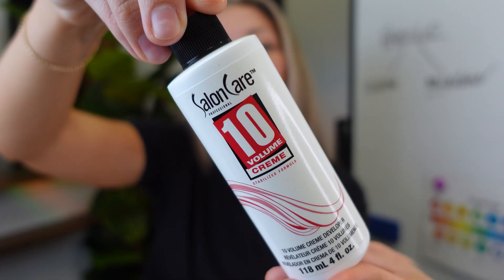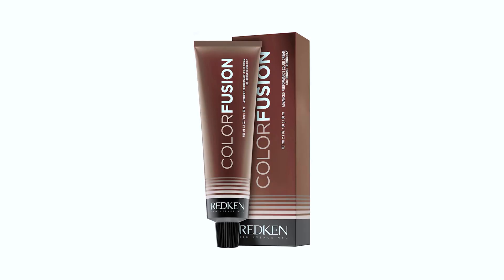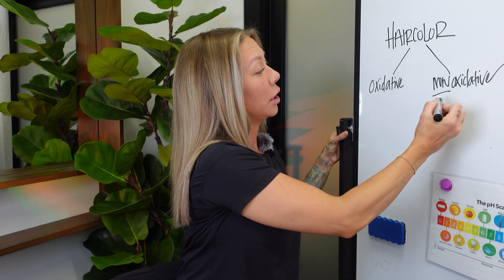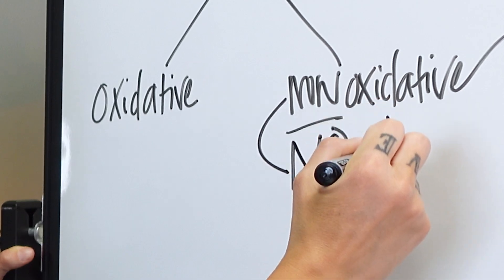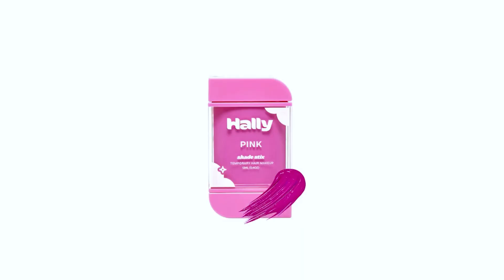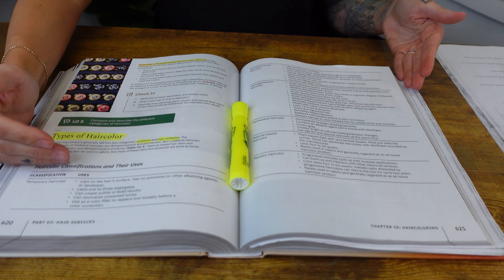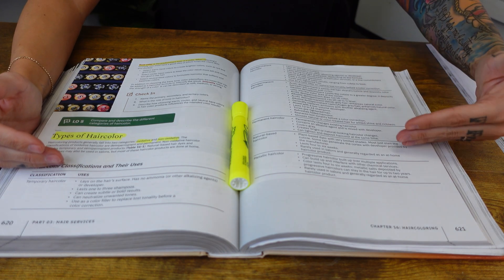Oxidative hair colors will use a developer. So this will be your permanent and demi-permanent hair colors. Non-oxidative means no developer, and that will be your temporary and semi-permanent hair colors. On page 620 to 621 they have a chart. We're going to go over each hair color individually — this chart is just showing you bullet points or main things you need to know about each hair color.